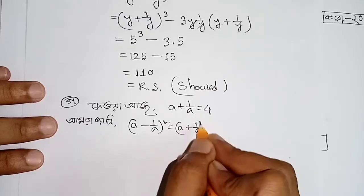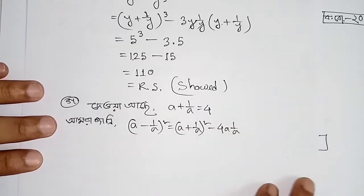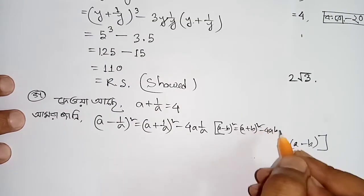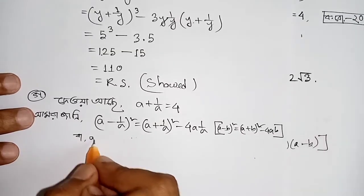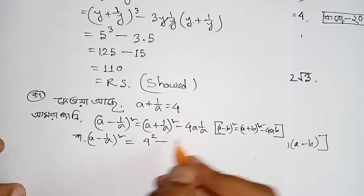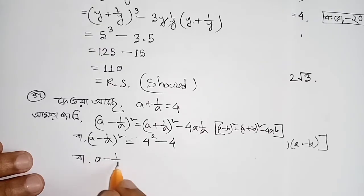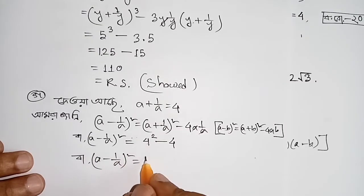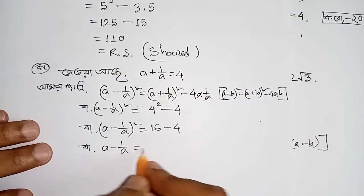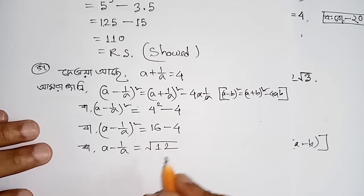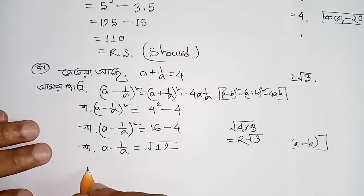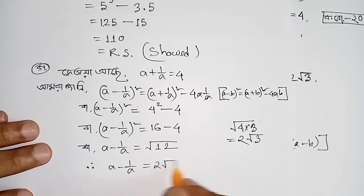Using a minus b whole square equals a plus b whole square minus 4ab: 2a minus 1 by a whole square, then a minus b whole square minus 4ab. So 2a minus 1 by a whole square equals 4 minus 2 by a square. The result gives a minus 1 by a equals 2√3.